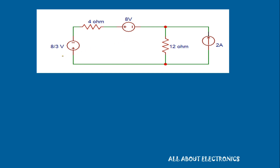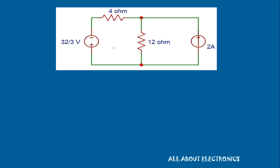Now we have the 8/3 V voltage source in series with the 8V voltage source. We can replace them with a single equivalent voltage source: 8 + 8/3 = 32/3 V. The equivalent circuit now has a 32/3 V voltage source in series with the 4Ω resistor.